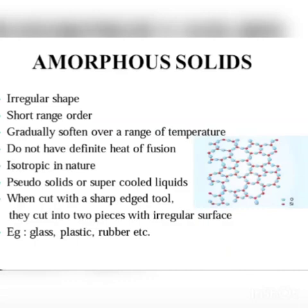Amorphous solids do not have a definite heat of fusion. They are isotropic in nature — which means the physical properties of amorphous solids are the same in any direction. This is because they have short range order, so the arrangement is irregular and the same measured values are obtained in any direction.